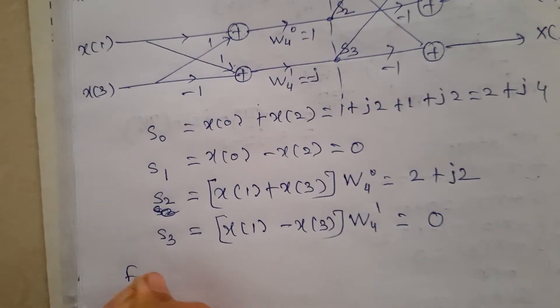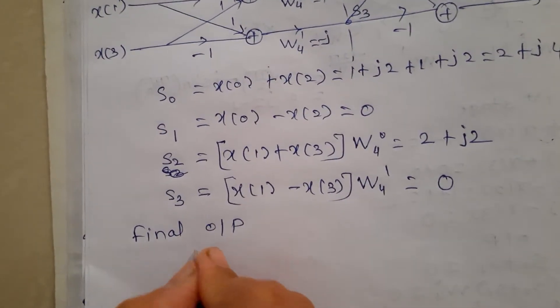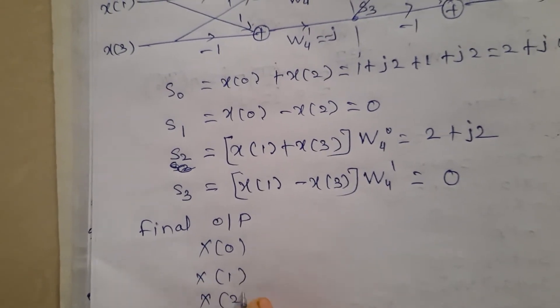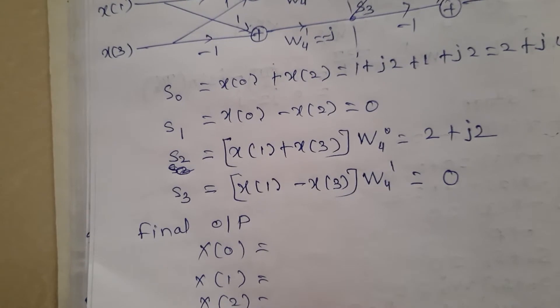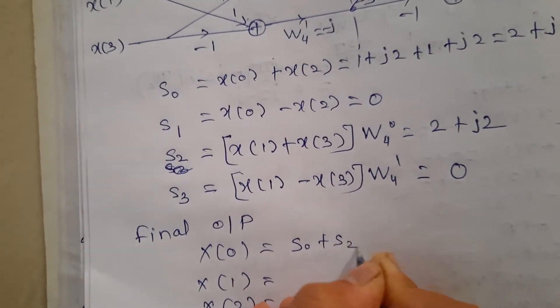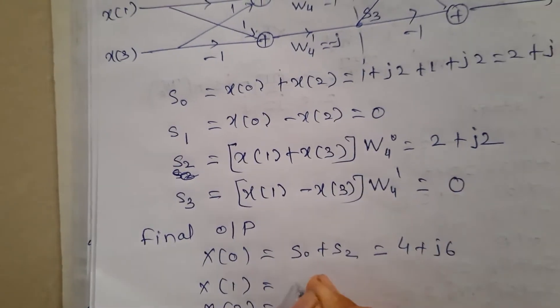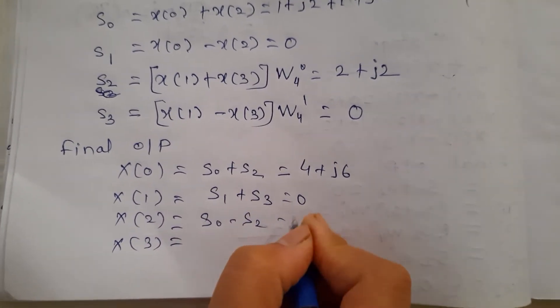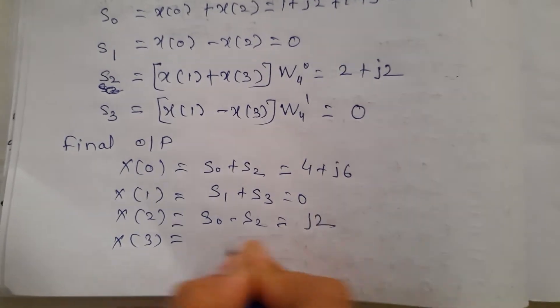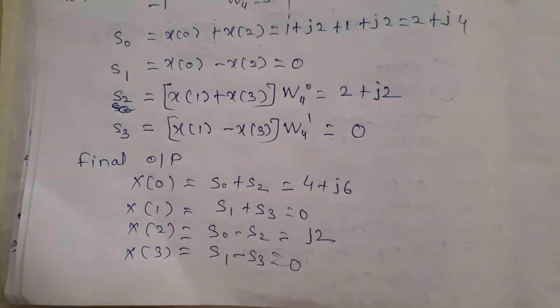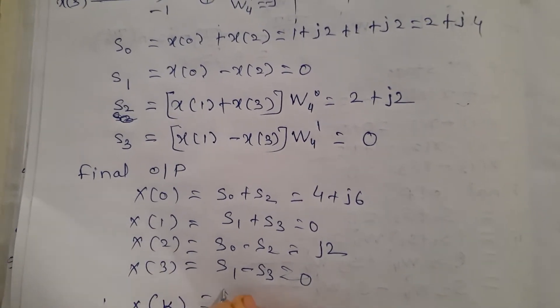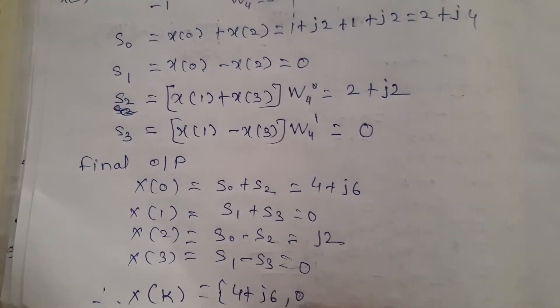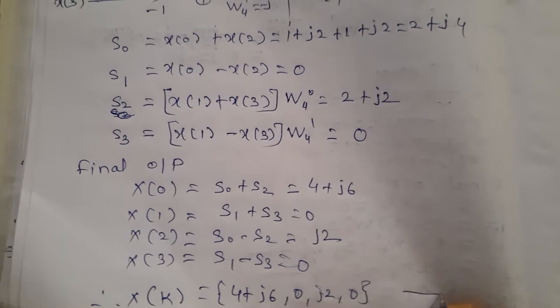Final output: we find X(0), X(1), X(2), and X(3). X(0) = s0 + s2 = 4 + j6. X(1) = s1 + s3·W4 = 0. X(2) = s0 - s2 = j2. X(3) = s1 - s3 = 0. So the sequence for X(k) = {4 + j6, 0, j2, 0}.